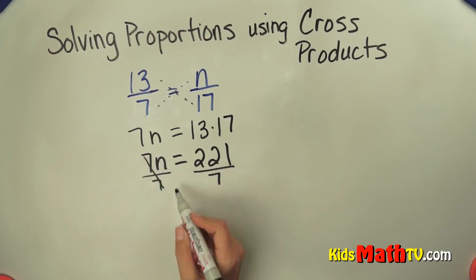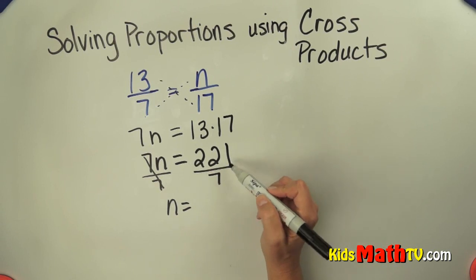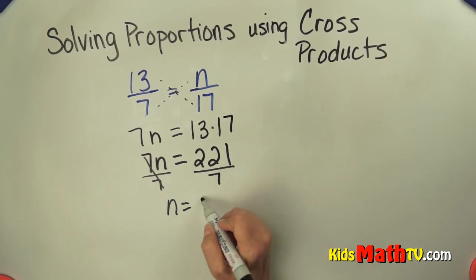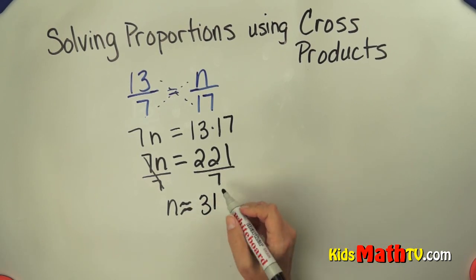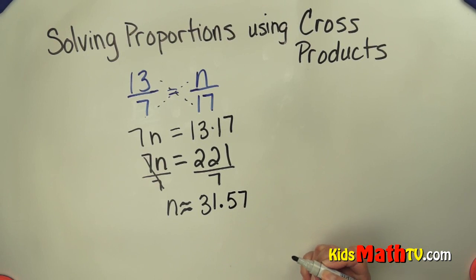This cancels each other out, 7 divided by 7 is 1. 1n equals, and then 221 divided by 7 is approximately 31.57.